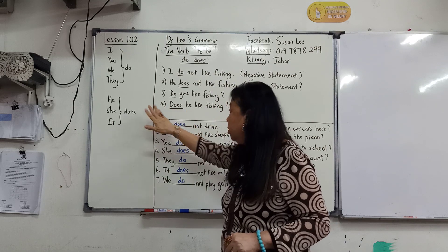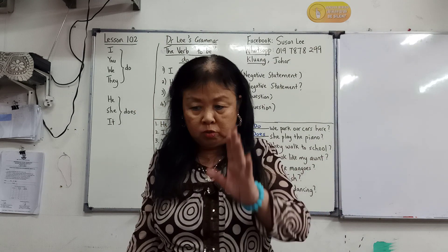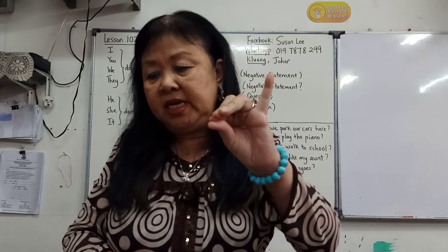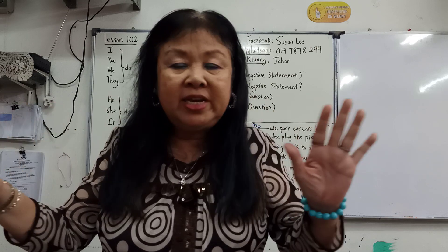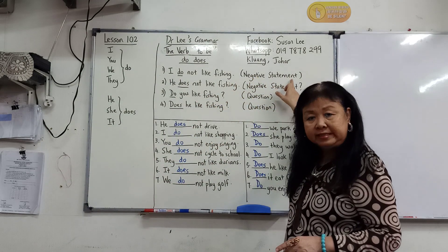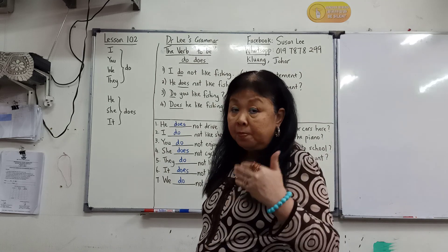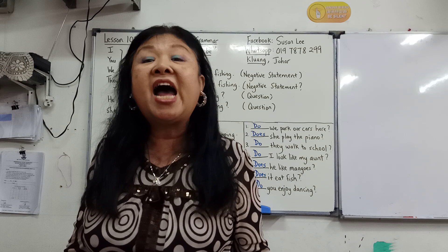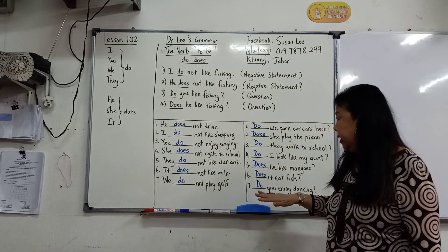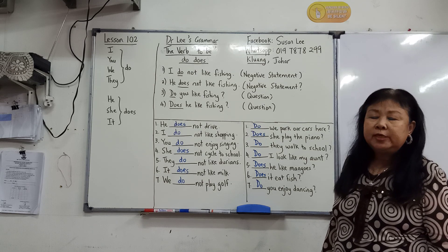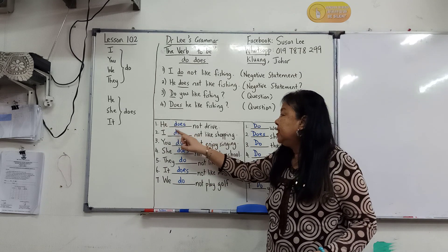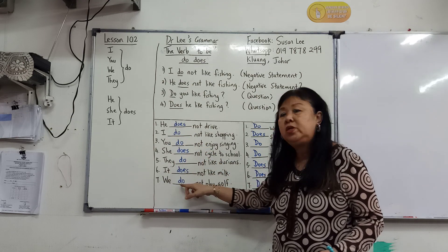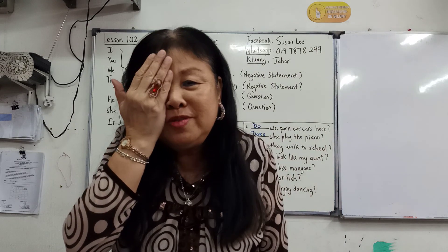So now I repeat: I, You, We, They — we use Do. He, She, It — we use Does. Do is used to negate something or to say something is not/negative — negative sentence. Do and Does are used to ask a question, meaning 'Adakah' (whether). I have made fourteen sentences here. Let's discuss them: He Does, I Do, You Do, She Does, They Do, It Does, We Do — you can answer with your eyes closed, because you've already memorized: I, You, We, They — Do; He, She, It — Does. Just look at the subject.